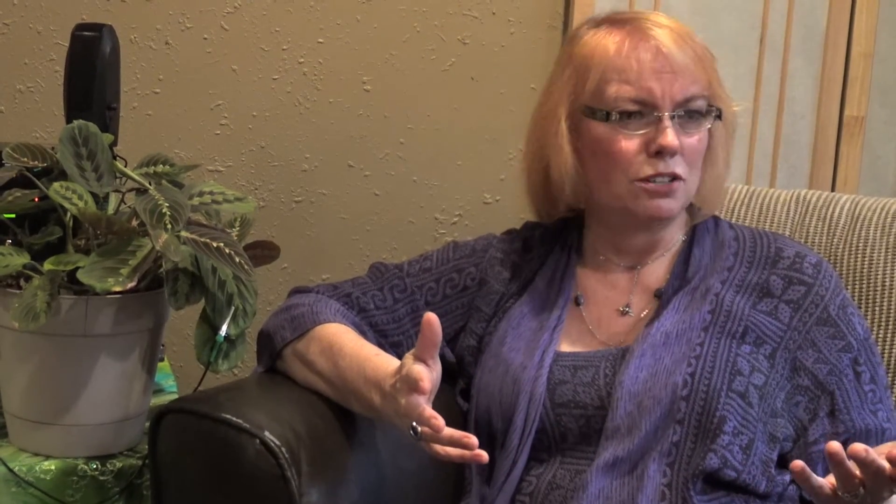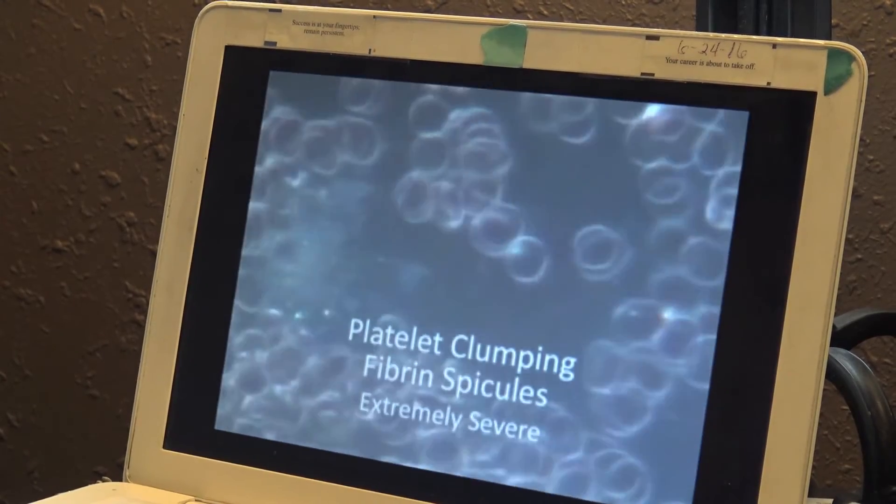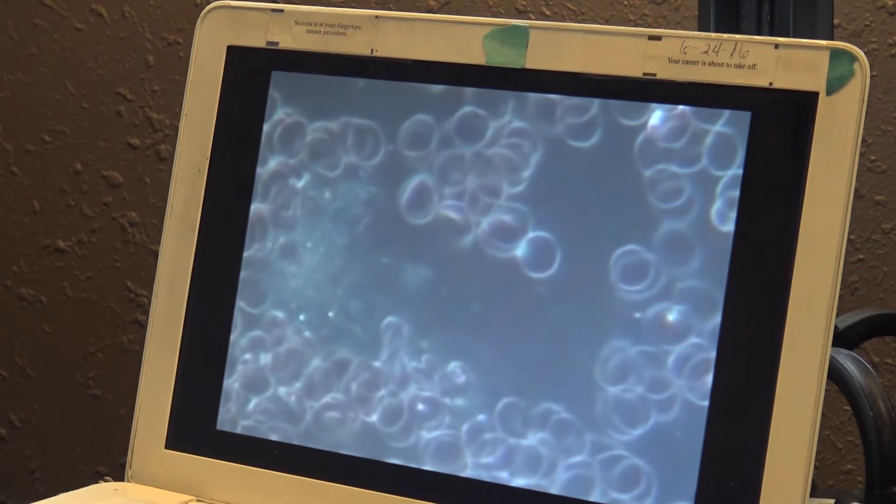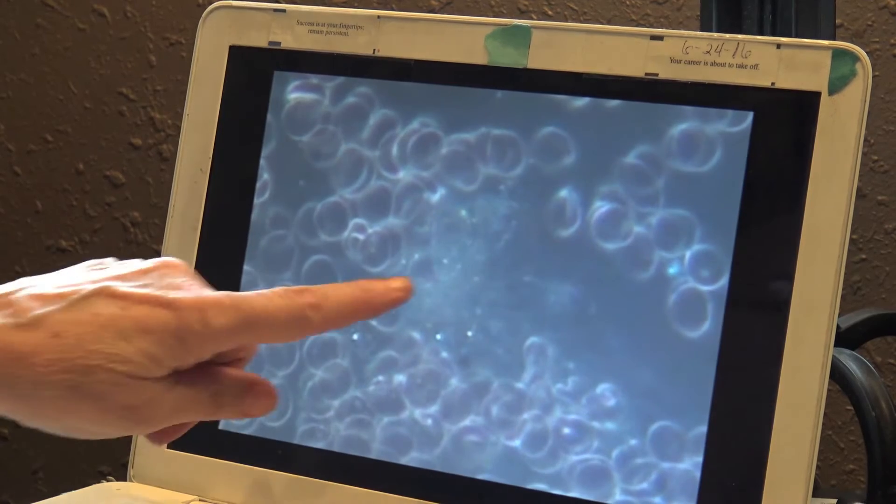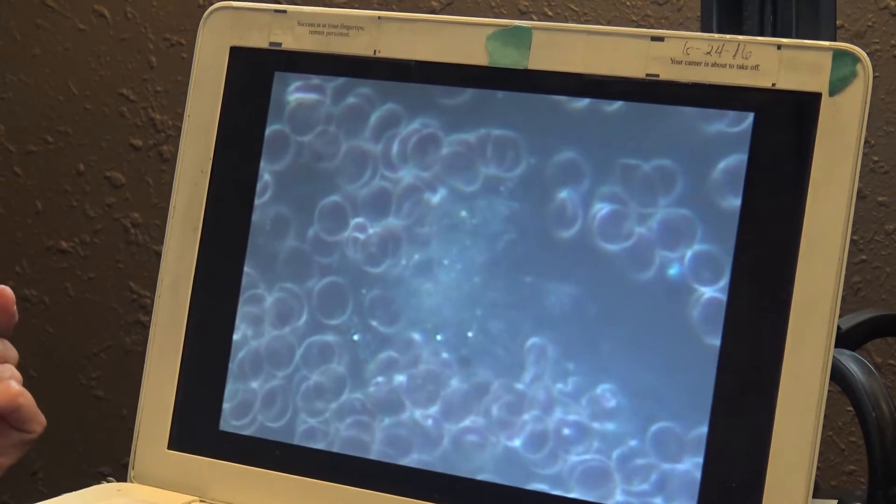Well, heart disease is like the number three killer in our country. You want a certain amount of platelet clumping so that your blood clots when you have an injury, but you don't want the blood clotting when it's in your body without an injury. And so too much of that can cause all kinds of problems.